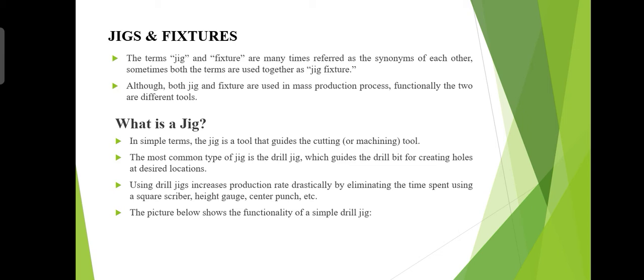When a jig is used, the pattern of holes produced will always be identical. This enables close tolerances to be maintained between holes and locations. If you are drilling in a piece of metal and you are not using a jig, it is impossible to produce identical holes. For example, if you are going to drill 10 mm holes, they will not be identical without the use of jigs.